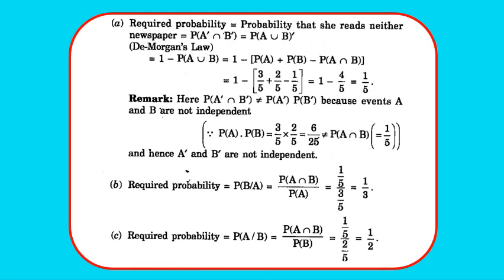P(neither Hindi nor English) = P(A'∩B') = 1 - P(A∪B) = 1 - (3/5 + 2/5 - 1/5) = 1/5. Part (b): P(B|A) = P(A∩B)/P(A) = (1/5)/(3/5) = 1/3. Part (c): P(A|B) = P(A∩B)/P(B) = (1/5)/(2/5) = 1/2. Please pause and note down the solution.